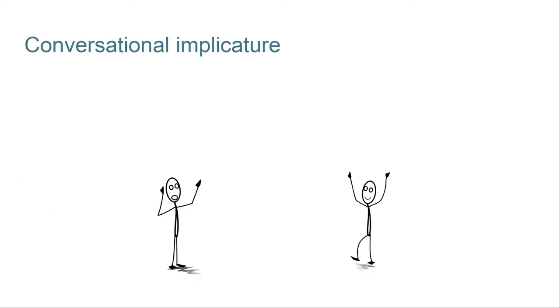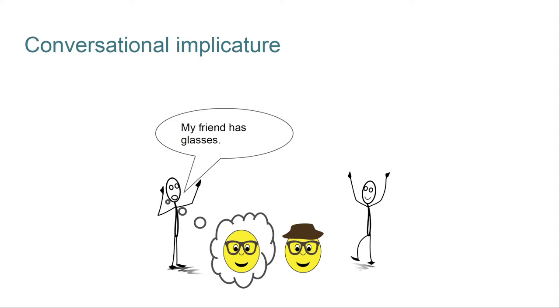We can also motivate RSA using Grice's notion of a conversational implicature. I have a separate screencast on implicature that covers that idea in detail, so I won't go into too much depth here. But informally, suppose we have this speaker on the left and this listener on the right, and imagine they're in a context containing these two salient individuals. Now the speaker would like to refer to the friend on the left. To do this, she says, my friend has glasses.